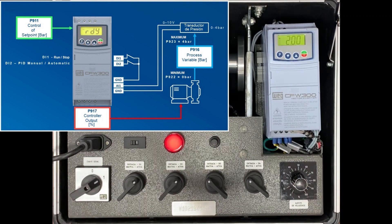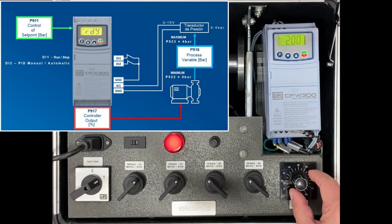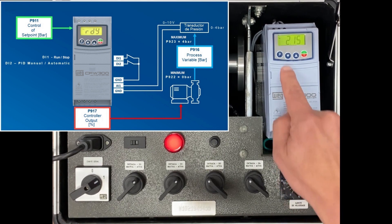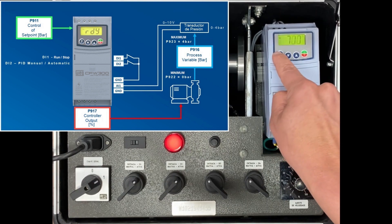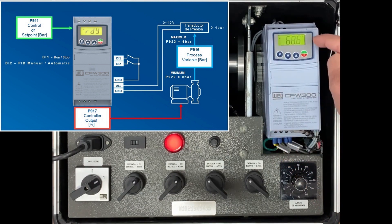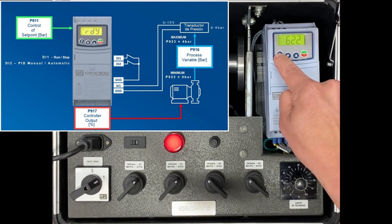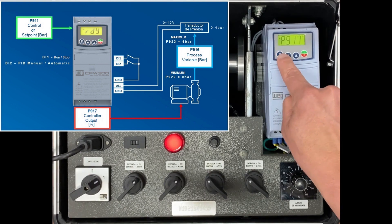Once again, if the opposite condition occurs, in which the measured pressure exceeds the desired value, the drive will slow down the motor. This speed decrease will bring about a pressure reduction until we get the desired value equal to the process variable value.